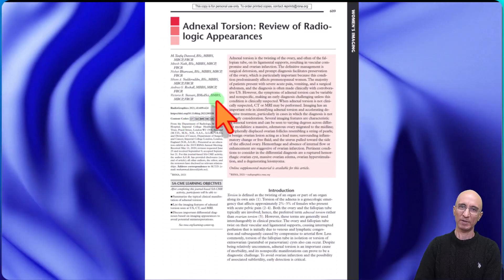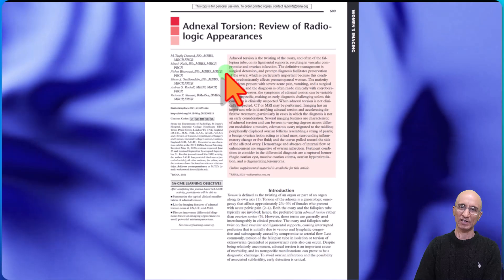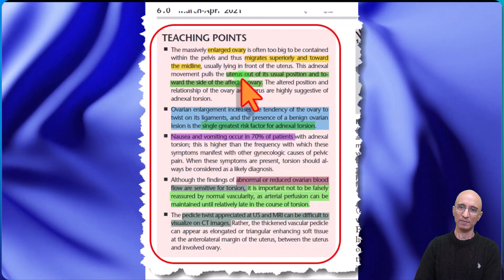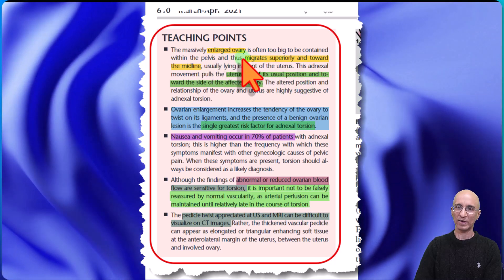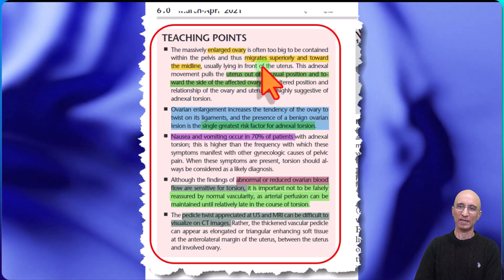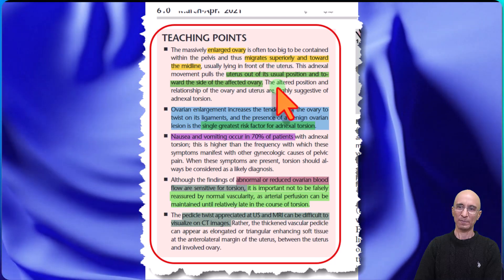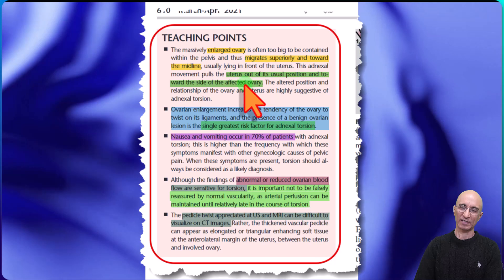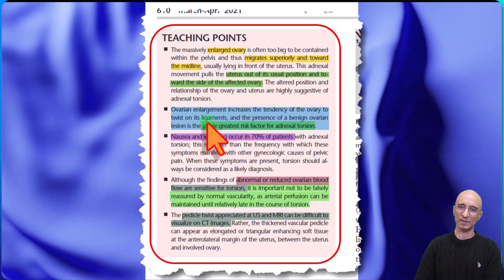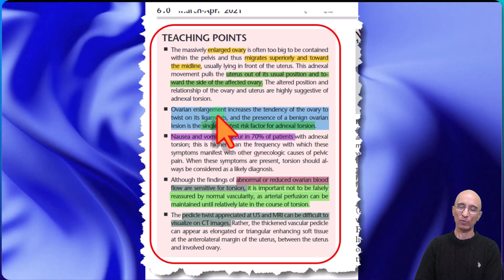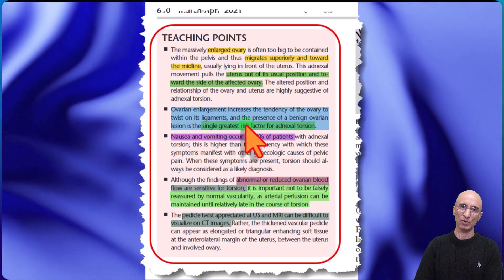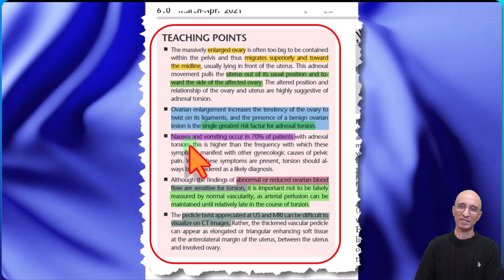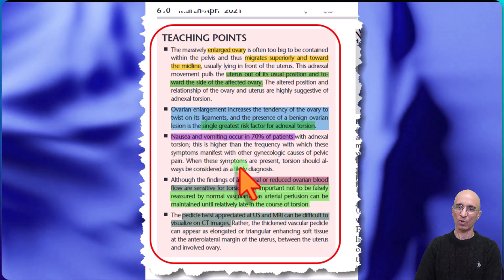A nice review article published in Radiographics on adnexal torsion provides useful teaching points. In the setting of adnexal torsion, the ovary is usually enlarged and can be displaced towards the midline. The uterus can be dragged towards the affected side due to ligamentous attachments. It is important to remember that ovarian enlargement due to a benign or malignant lesion is a risk factor for ovarian torsion. Patients typically present with nausea and vomiting.